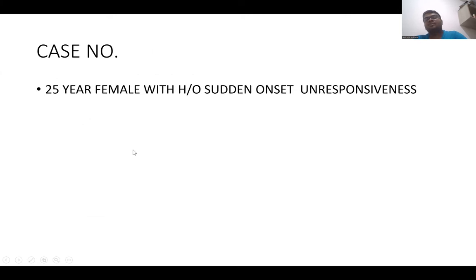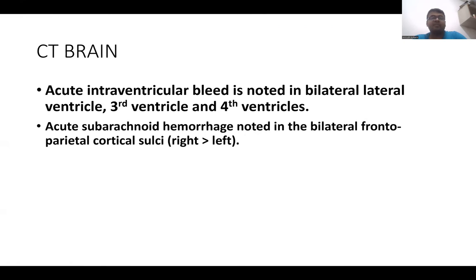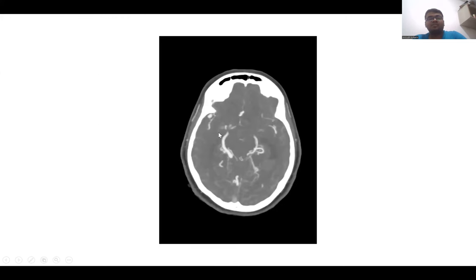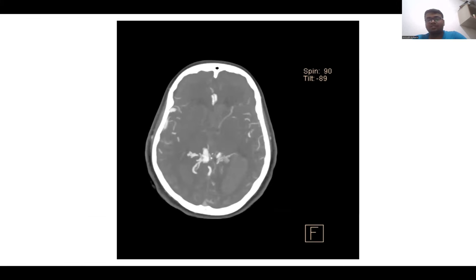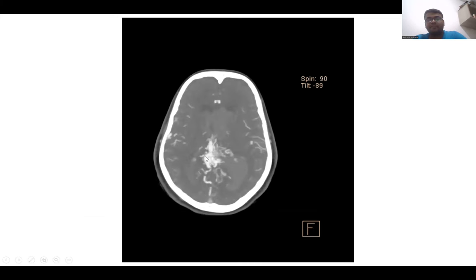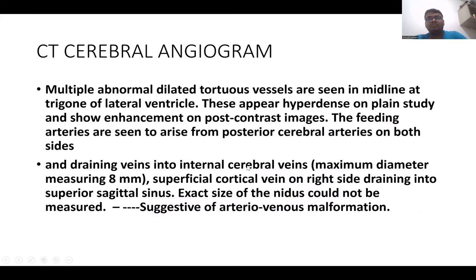The next case is a 25-year-old female with sudden onset unresponsiveness. There was intraventricular hemorrhage in the third ventricle, lateral ventricle, and fourth ventricle. The cause was found to be multiple collaterals arising from the posterior cerebral artery, with an arteriovenous nidus present and draining veins into the internal cerebral veins, suggesting an arteriovenous malformation.